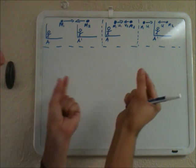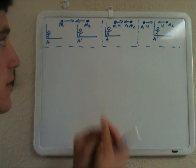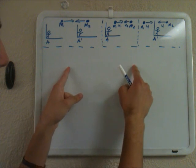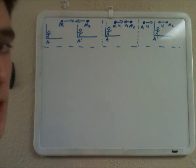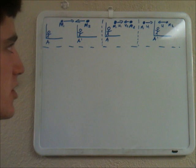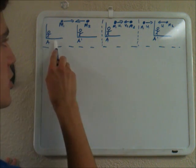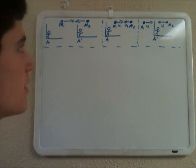They are going to collide and stick together. So two objects are going to collide, stick together, and keep moving in one direction. And they're being watched by two frames of reference, A and A prime.